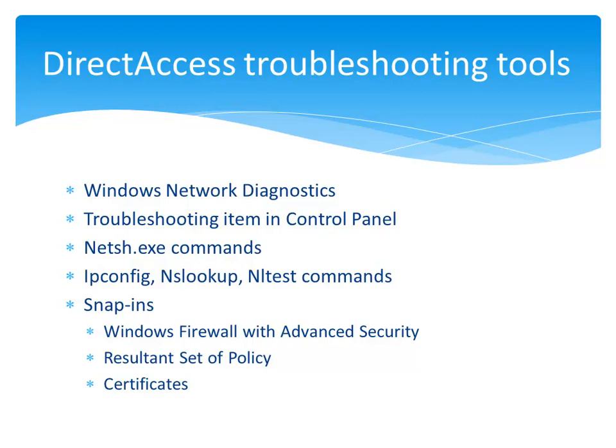The first part of this document lists and briefly describes the various tools you have to troubleshoot Direct Access, ranging from Windows Network Diagnostics, which you can initiate from the notification area of the Windows desktop, to a Direct Access troubleshooter in the Troubleshooting item in Control Panel.